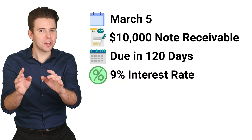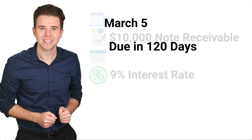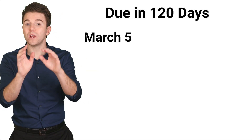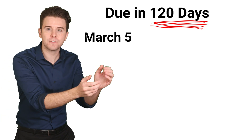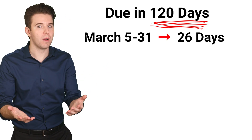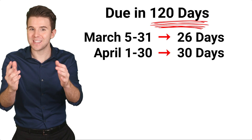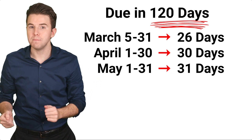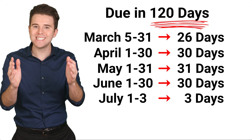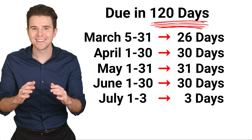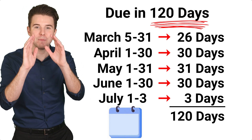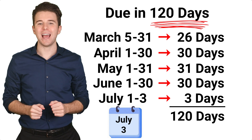So first, let's determine when this note matures. The note is dated on March 5th, so we count 120 days after that date. There are 26 days remaining in March, 30 days in April, 31 days in May, 30 days in June, and then the remaining 3 days in July. We have now counted 120 days to get a maturity date of July 3rd.